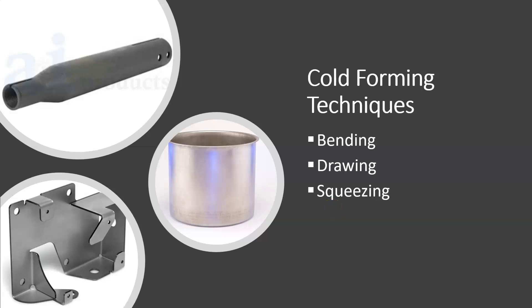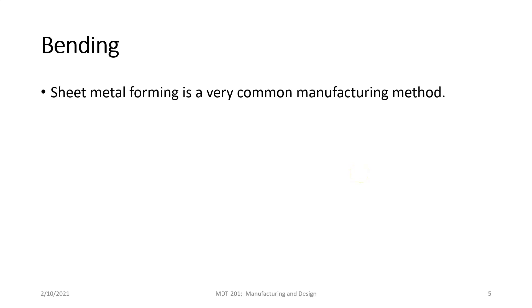Let's look at some of the cold forming techniques: bending, drawing, and squeezing. For a bending operation, this is a sheet metal operation — it's very, very common. Bending sheet metal is a cold forming technique because we don't elevate the temperature of the sheet metal before we do it. We bend the metal past its elastic state into its plastic state.